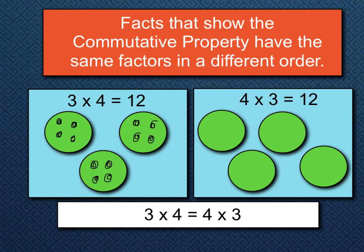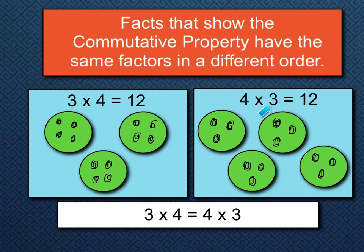And four times three equals twelve over here. That's four groups of three in each group. Notice I'm not putting the same number in each group as the first model — the first model had four in each group, and this one has three. Do we have four groups? One, two, three, four. And three in each group? One, two, three. Three, six, nine, twelve. So look: three times four is equal to, has the same value as, four times three. That is the commutative property — factors just in a different order, giving the same product.